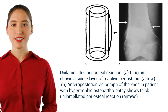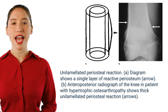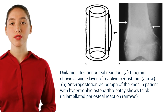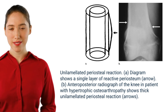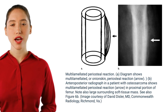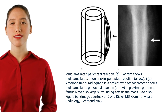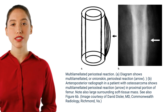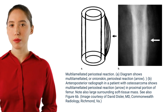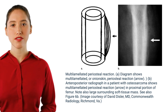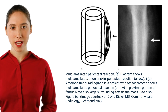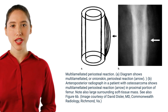Unilaminar periosteal reaction: diagram shows a single layer of reactive periosteum. Anteroposterior radiograph of the knee in a patient with hypertrophic osteoarthropathy shows thick unilaminar periosteal reaction (arrows). Anteroposterior radiograph in a patient with osteosarcoma shows multilaminar periosteal reaction (arrow) in the proximal femur with a large surrounding soft tissue mass. Image courtesy of David Dissler, Maryland Commonwealth Radiology, Richmond, VA.